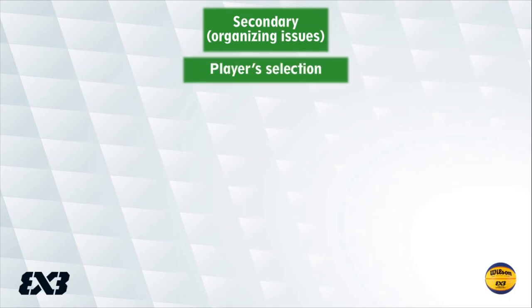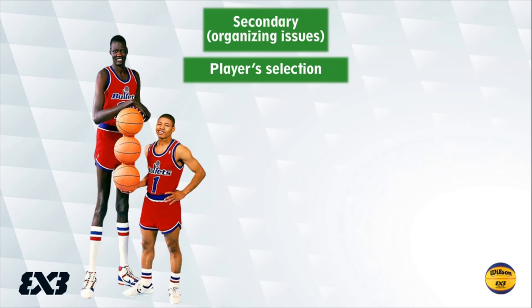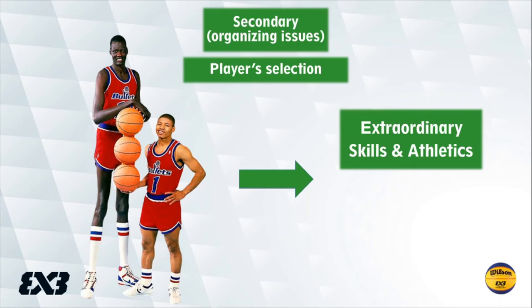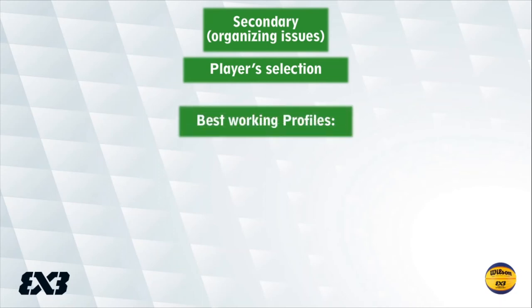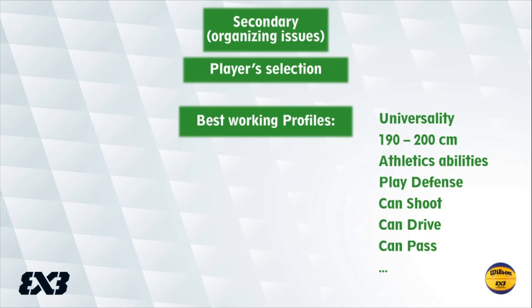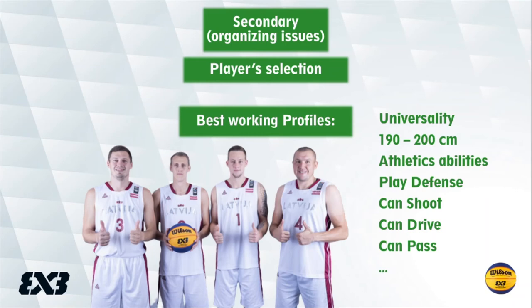Now let's quickly go through the organizing issues. First is player selection — what should a coach pay attention to when picking players for an effective 3-on-3 team? Of course players can be any size, but then they need extraordinary athletic skills, and must be able to play defense in mismatches — small players need to defend in the post, big players need quick feet to defend the perimeter. The best working profile is above-average height with good athleticism, able to play defense, shoot, drive, and pass — all-around universal players.